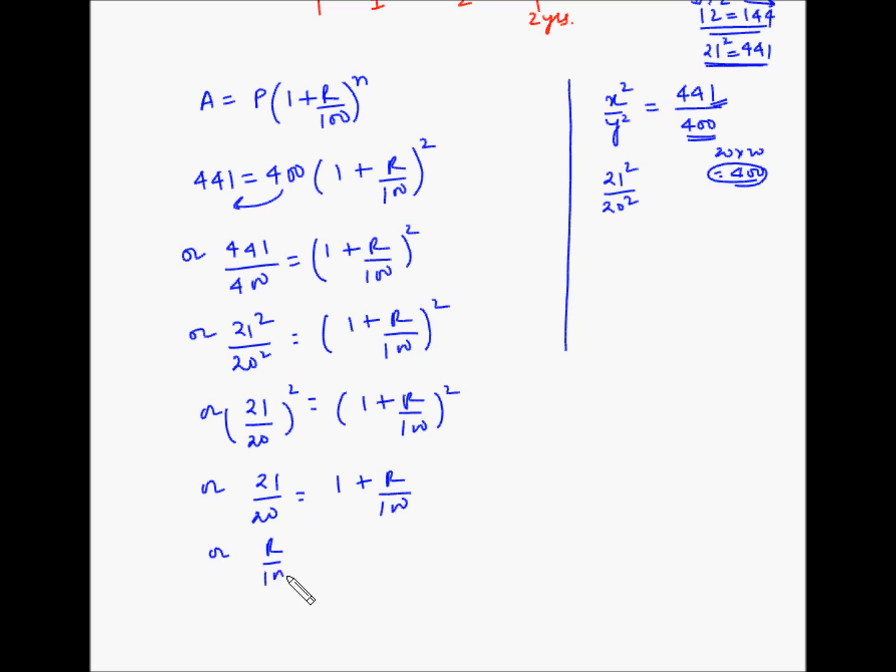So R by 100 is equal to 21 by 20 minus 1. So R by 100 is equal to 21 minus 20, taking the LCM as 20. So R by 100 is equal to 1 by 20, or R is equal to 100 by 20. Two fives are 10. So R is equal to 5 percent.